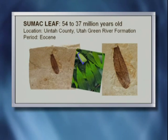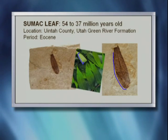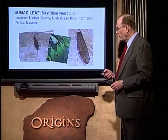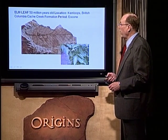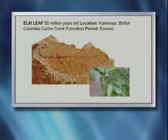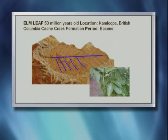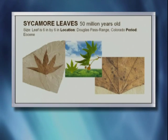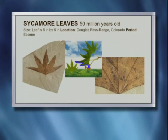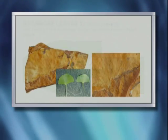Sumac leaf, good example. You can see the details here very clearly, and you can see the same details in the fossil example. A lot of these are from the Utah Green River formation. And another example — an elm leaf. Even the veins of the leaf are shown in exquisite detail. Sycamore leaf, very distinct, as you can see from the fossil record. And you can see by looking at a modern example, the vein structure is shown very clearly.